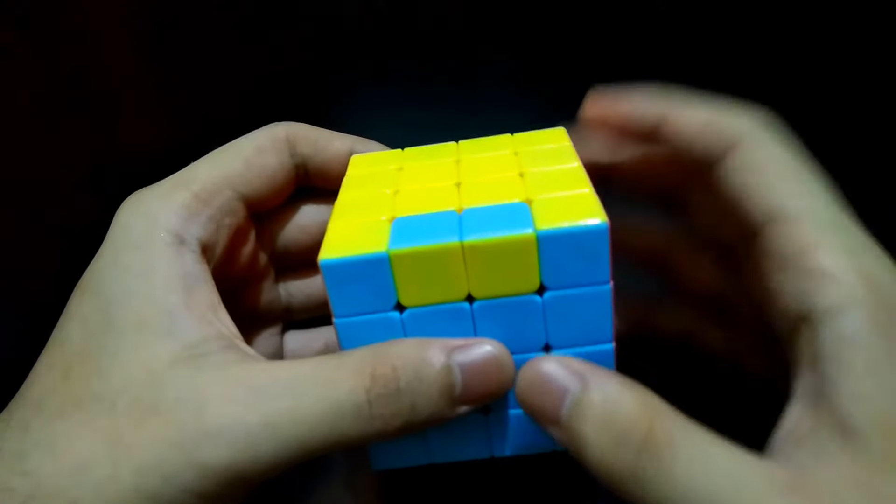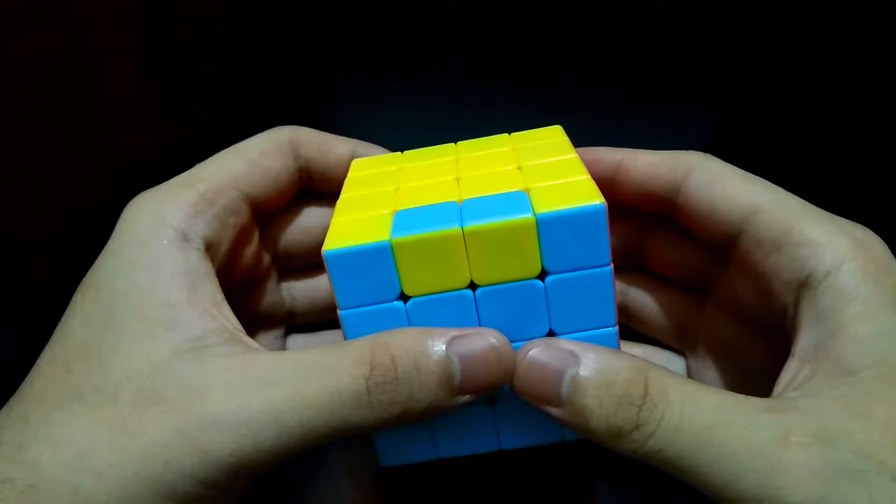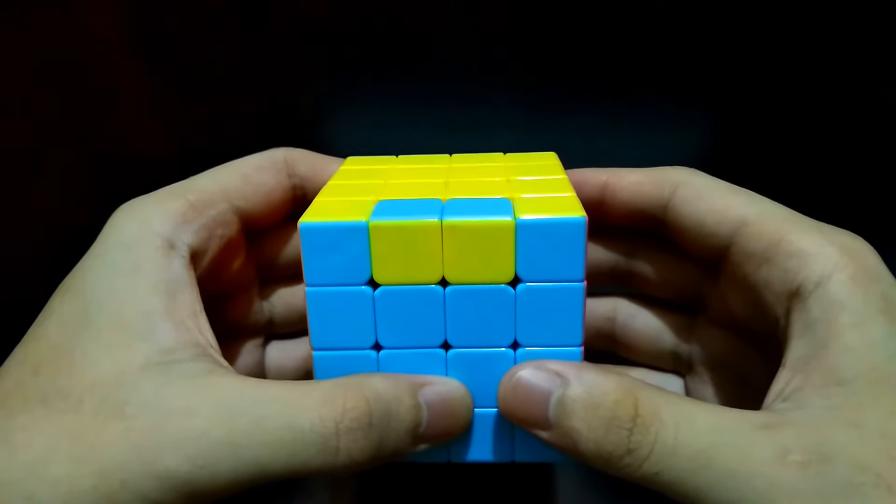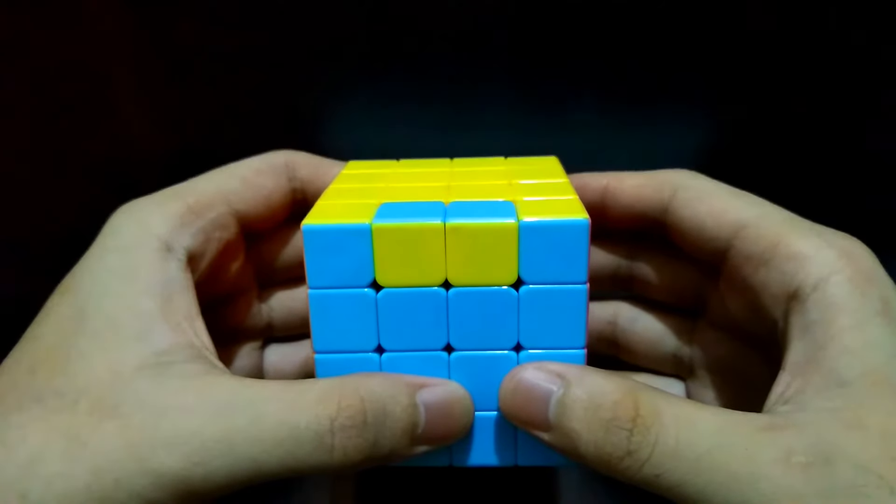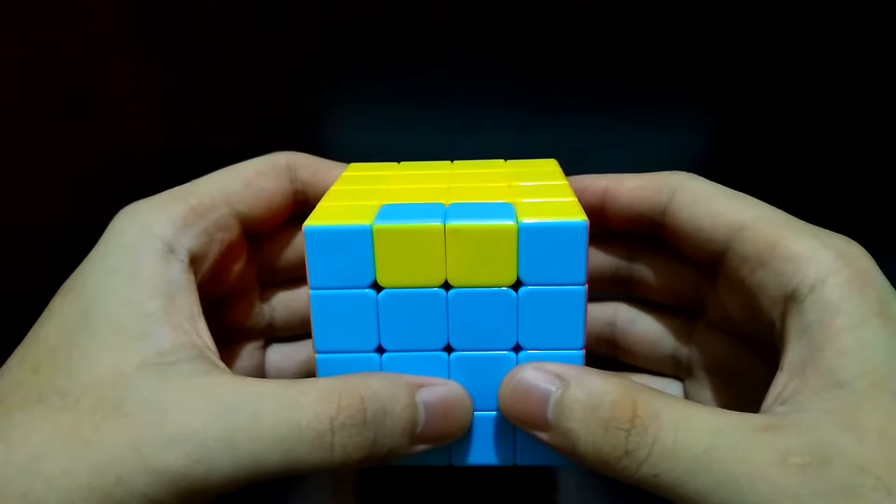That happens when a cube requires edge pairing like in this four by four as well as in five by five, six by six and many more. To fix the flipped edges, the algorithm is quite long but I'll guide you later to find clues on every step.